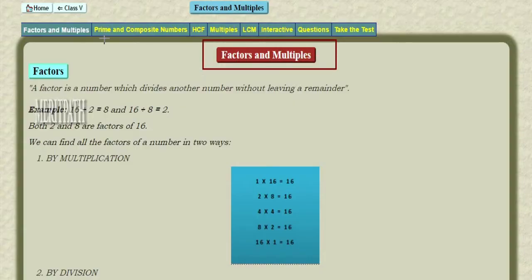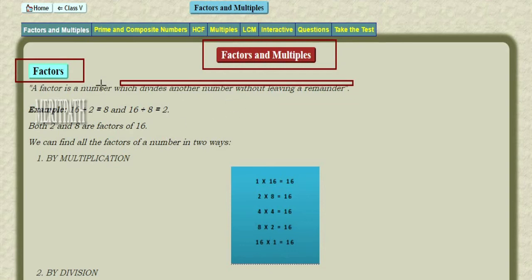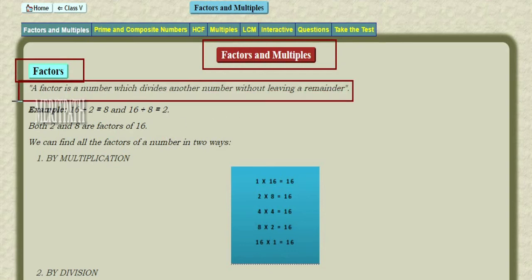Factors and Multiples. A factor is a number which divides another number without leaving a remainder. Let us take an example.